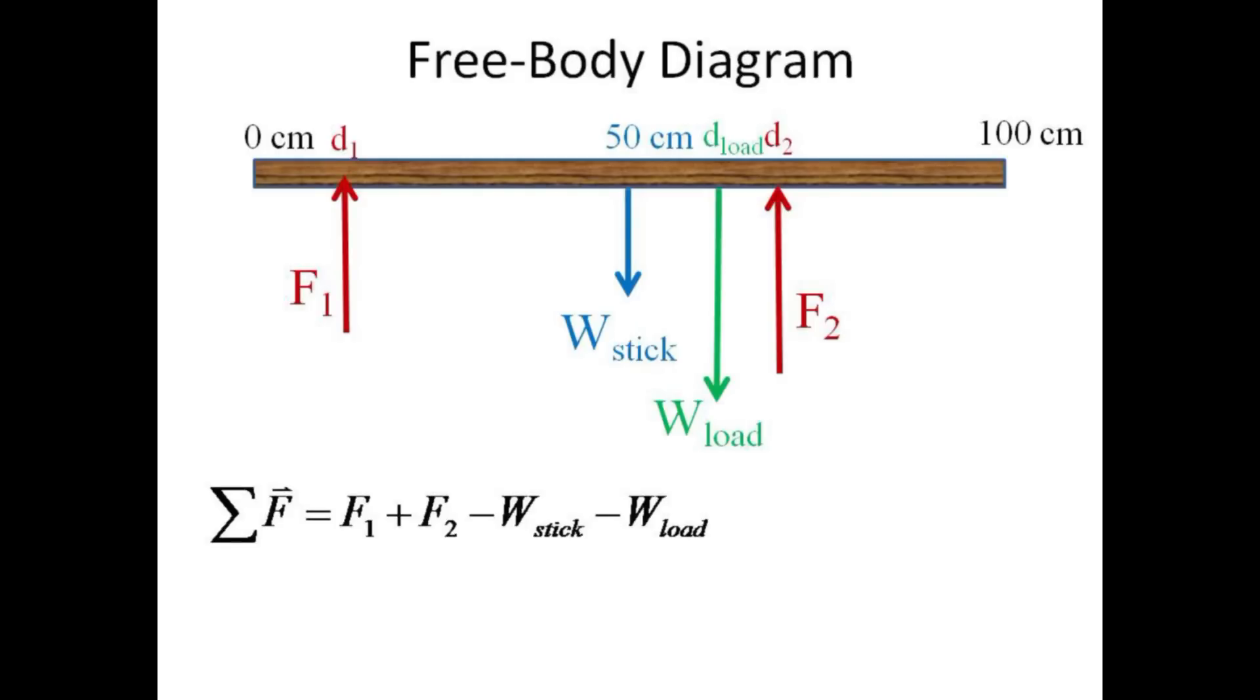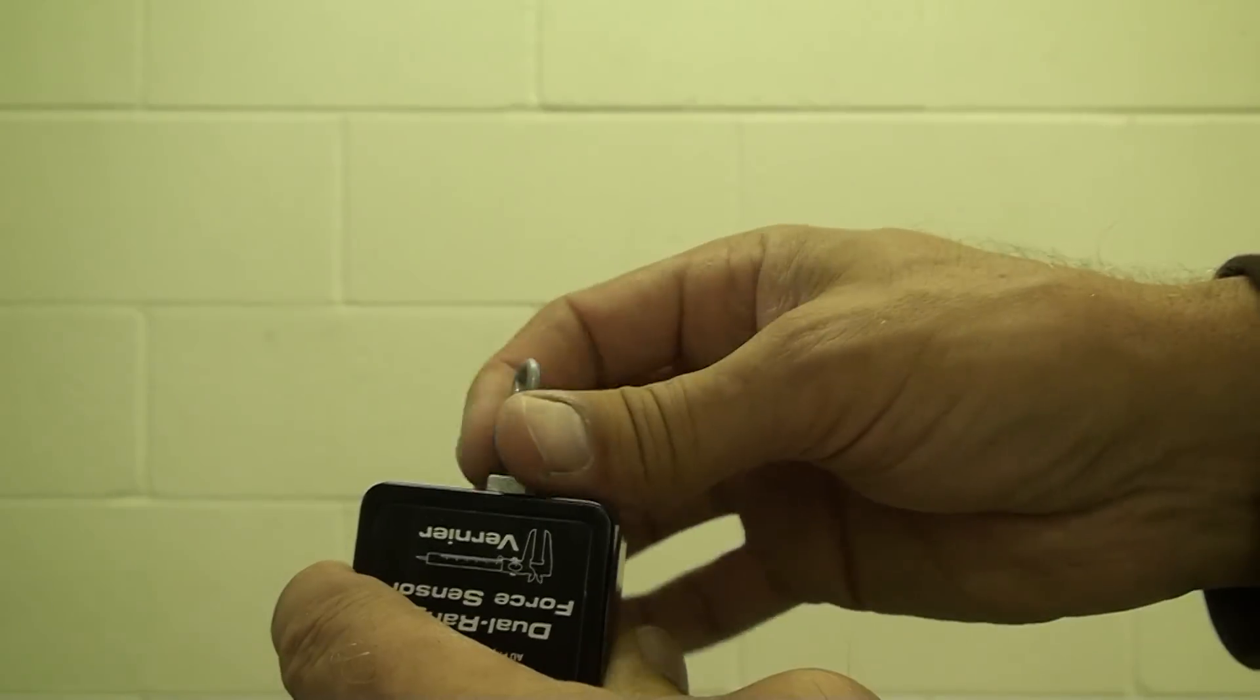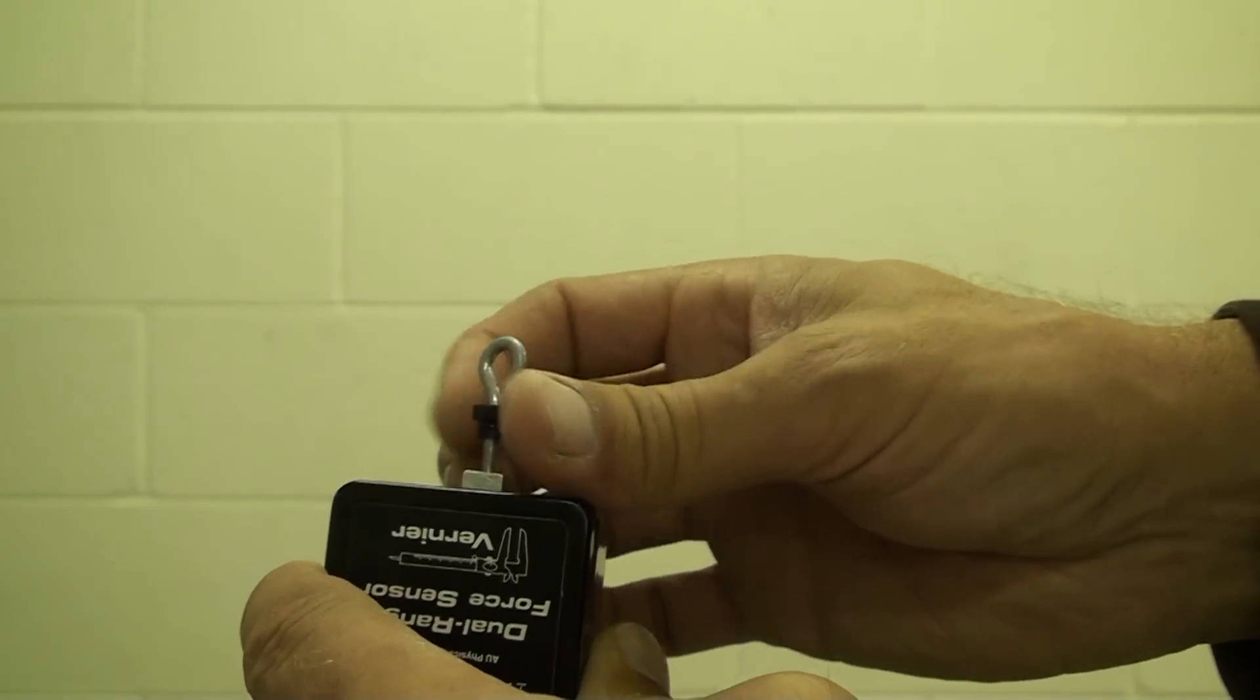The sum of the torques about the zero centimeter end will be f1d1 plus f2d2 minus w-stick d-stick minus w-load d-load. You will need the weight of the stick. The hook may be unscrewed from the force sensor to give a flat surface.